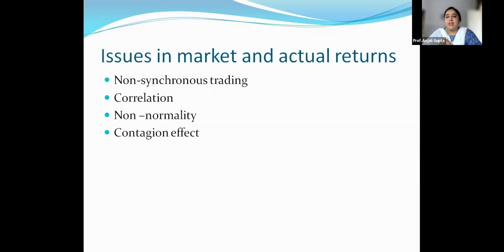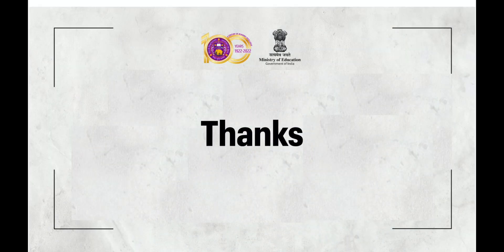In brief, for the purpose of event study, the series of returns or the sample companies whose returns we are using must be pure and must relate only to the event we are studying. With this, we come to the end of this video. In the next video, we will discuss in detail the other important terms used in event study — such as the average abnormal return, the cumulative average abnormal return, and how they are calculated using different software. Thank you.